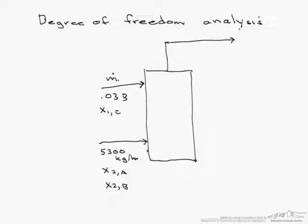So exiting the column we have a mass flow rate that I'm going to call m3 and it consists of only a.